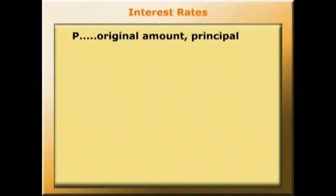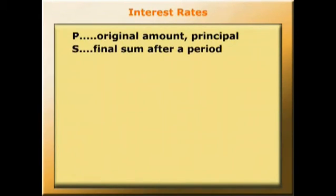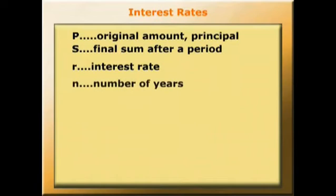Now let's generalize that. Let's call the original amount — the principal — P, and the final sum after a period S, and the interest rate R, and the number of years we're interested in N.